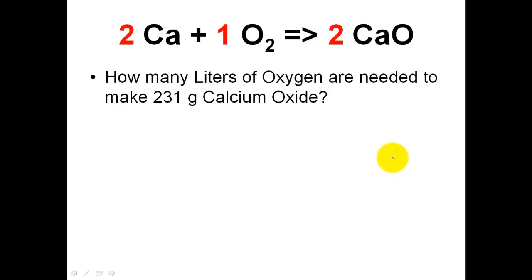In the first problem, what I want to know is how many liters of oxygen are needed in order to make 231 grams of calcium oxide. How many liters of O2 are needed to make 231 grams of calcium oxide? So I'm giving you this. You're starting off with 231 grams of calcium oxide, and the question is asking how many liters. So I'm looking for a certain amount of liters of O2. I'm going to write the givens out, and the given is 231 grams of calcium oxide. I have to write out the whole thing. I can't just write out grams, I need to write out grams of calcium oxide of CaO.